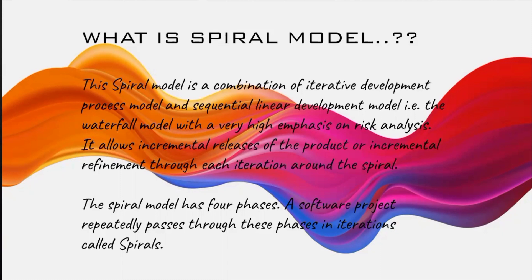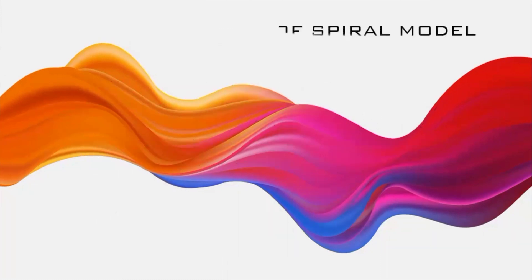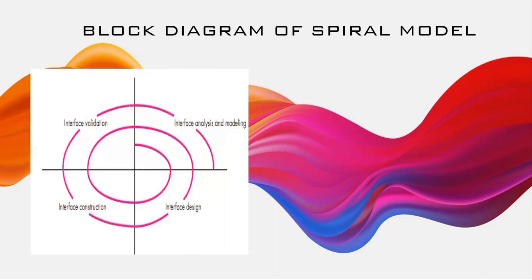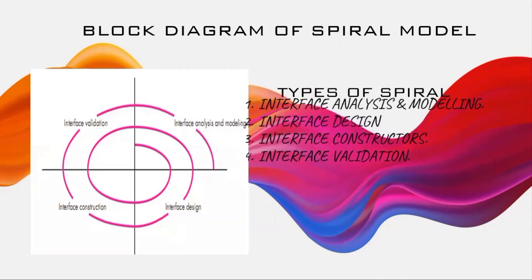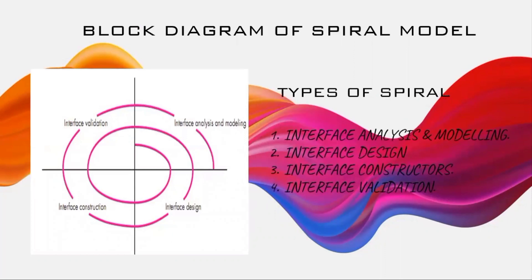Looking at the block diagram of the spiral model, you can clearly see there are four phases. These are: interface analysis and modeling, interface design, interface construction, and interface validation. These are the four types of spirals seen on the left side of the diagram.